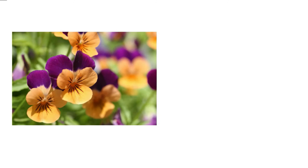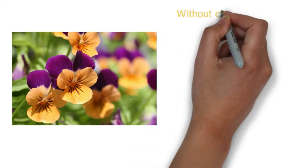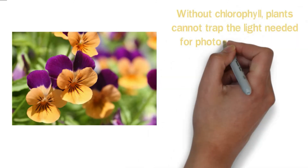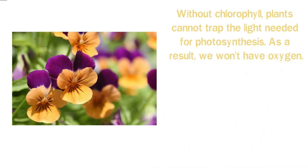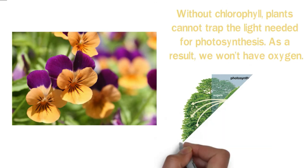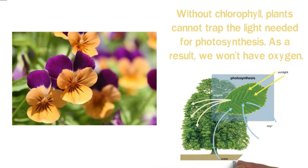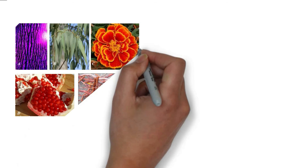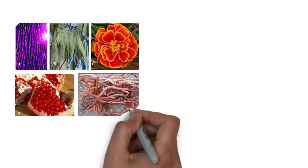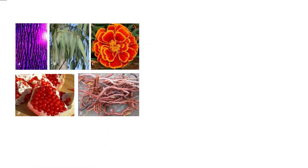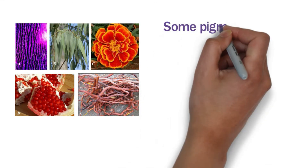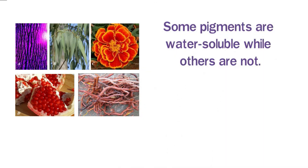Pigments create the beautiful and rich colors we see in different organisms and plants. Some pigments play a special role in biological processes. Without chlorophyll, plants cannot trap the light needed for photosynthesis, and we would not have oxygen. Plants also extract excess carbon dioxide from the atmosphere during photosynthesis, thus purifying the air we breathe. Both plant and earth pigments can be used in making paints and dyes.